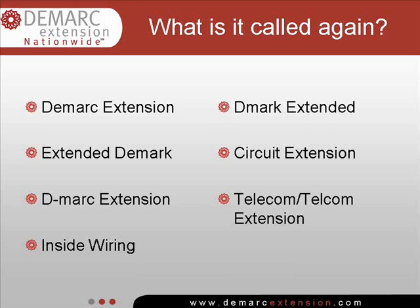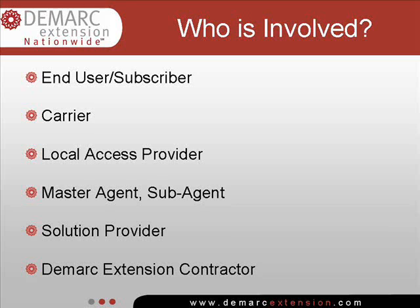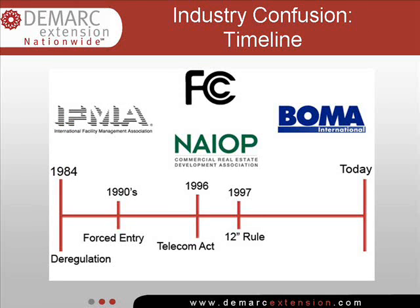Adding to the confusion and the lack of industry standards, responsibility for the DMARC Extension can be shifted to a number of entities involved. The person most directly affected is the end user, as their connectivity and dependent business operations are at risk. Also involved can be the carrier, local access provider, telecommunications agent, solution provider, and the DMARC Extension contractor. The DMARC Extension is governed by Part 68 of the FCC's regulations, by which cabling and ECPE interface to the local access provider network.